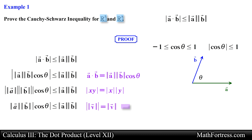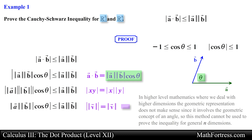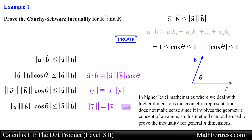Note that this proof is valid in the two and three dimensional cases because the dot product can be expressed in terms of cosine of theta, where theta represents the angle between the two vectors. However, in higher level mathematics where we deal with higher dimensions, the geometric representation does not make sense since it involves the geometric concept of an angle. So this method cannot be used to prove the inequality for general n dimensions.